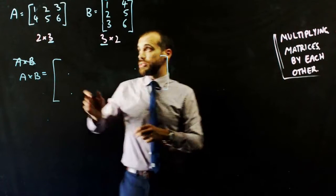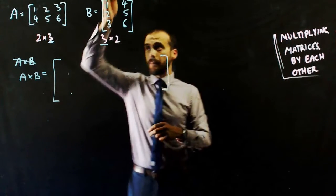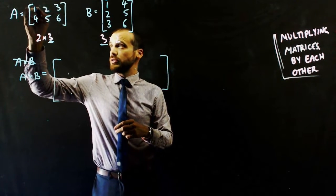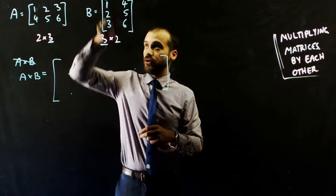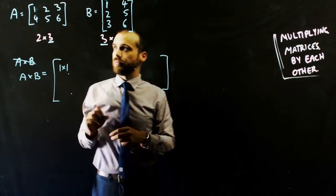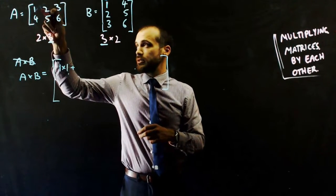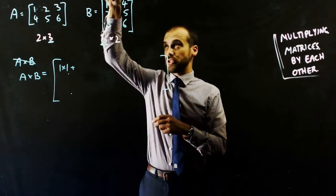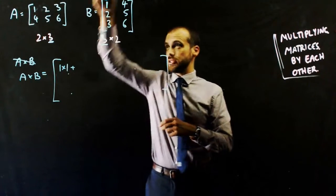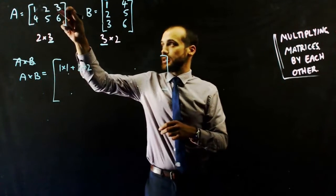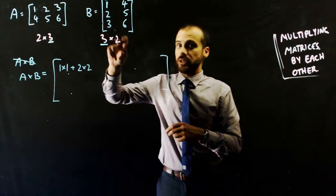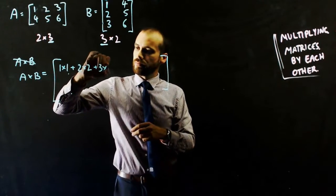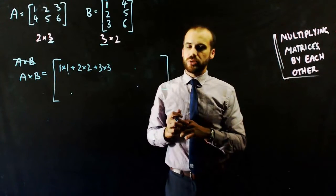The way that we do it is multiply the rows of the first matrix by the columns of the second one. So we take the first element of the first row times the first element of the first column — that's 1 times 1. Then we add the second element of the first row multiplied by the second element of the first column — 2 times 2. Then we take the last element of the row multiplied by the last element of the column. And there's our first element: 1 times 1, plus 2 times 2, plus 3 times 3.